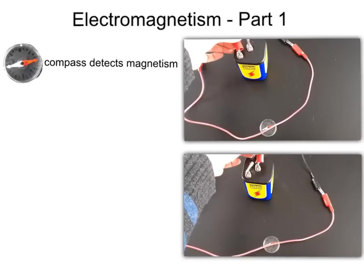Electromagnetism Part 1. In class we introduced the compass, and a compass is used to detect magnetism. It's really just a magnet that's free to float and rotate, and it lines itself up with the nearest strongest magnetic field.